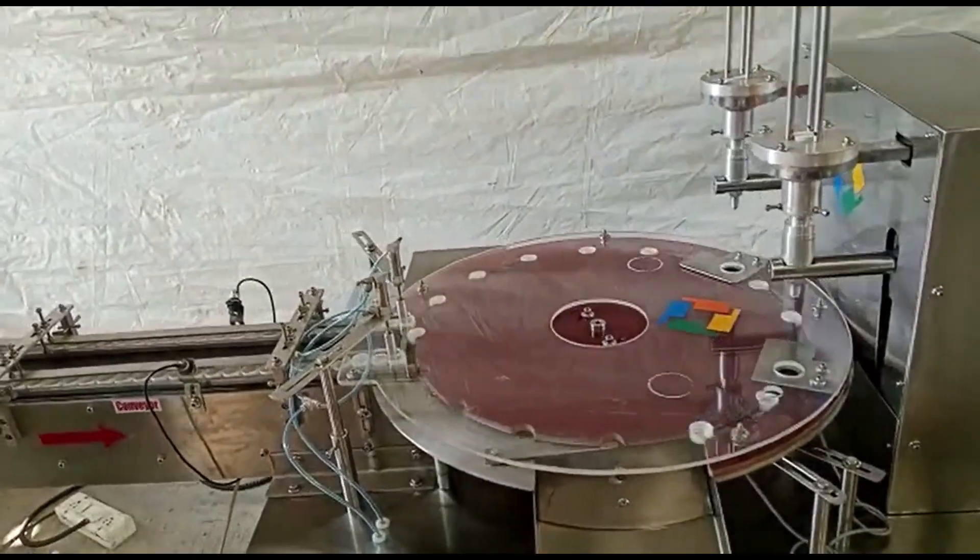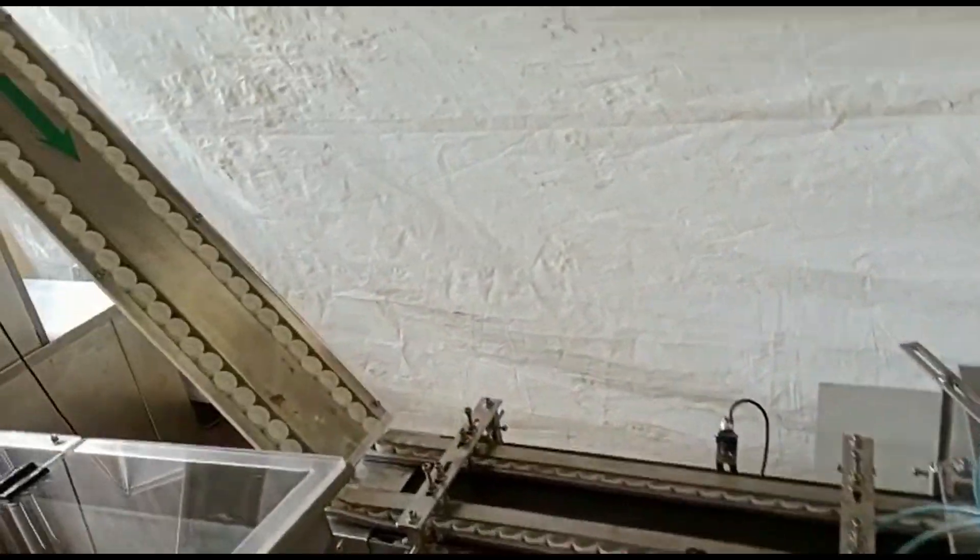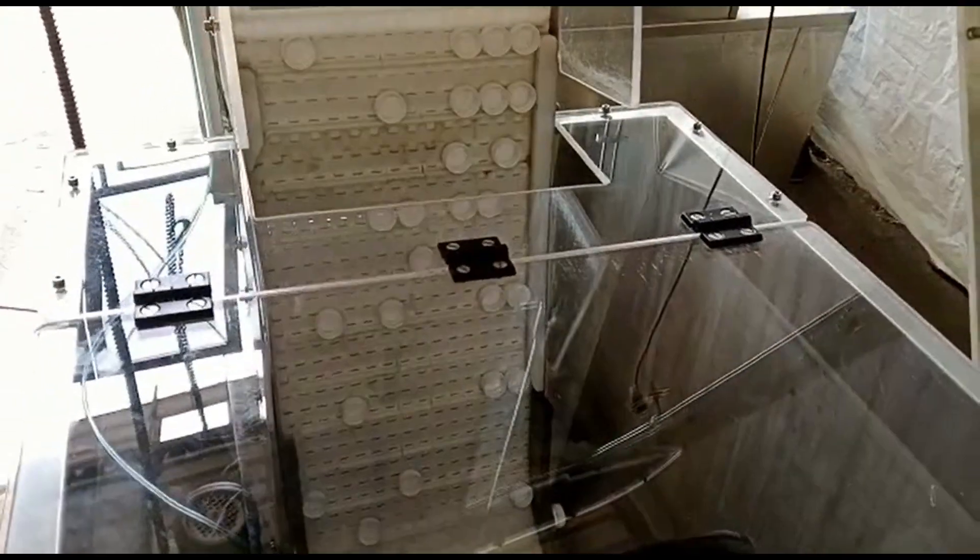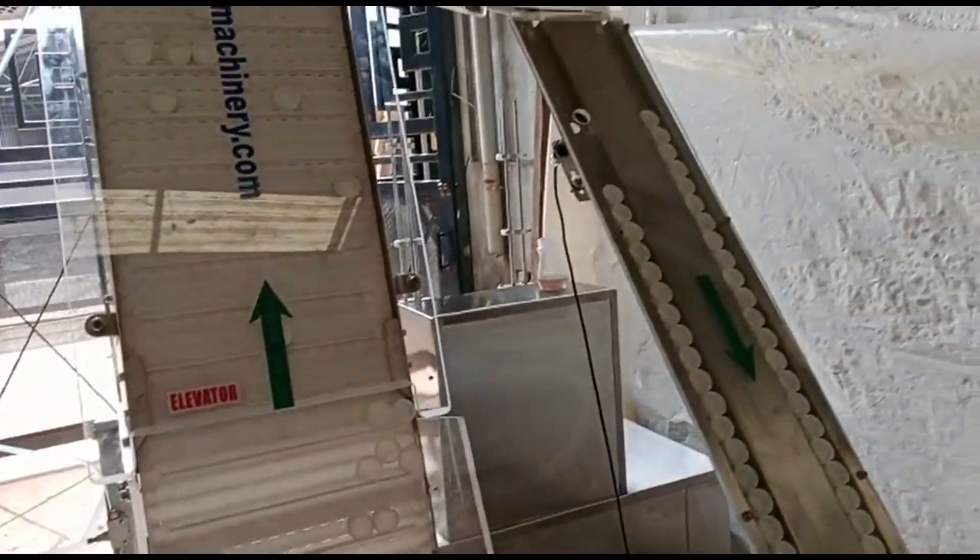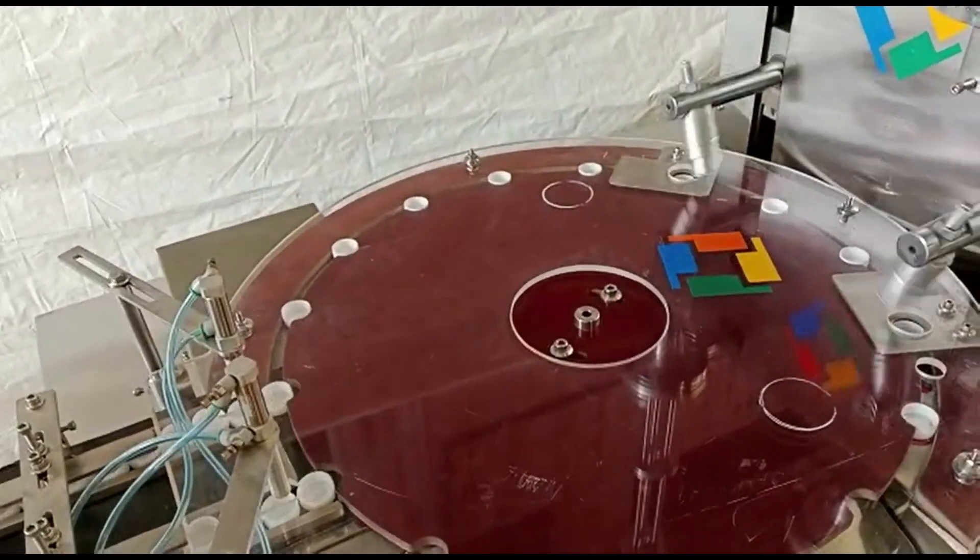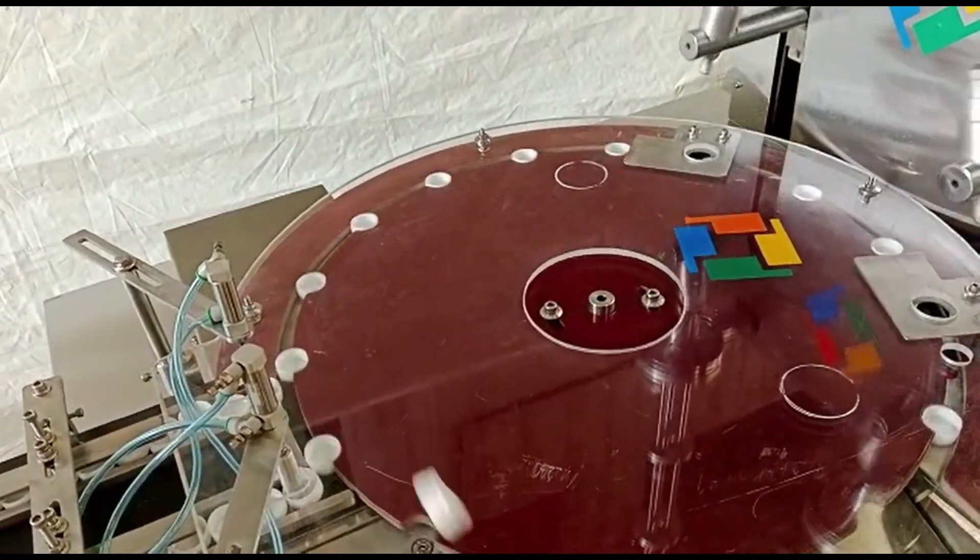The ward inserting machine includes mechanisms to orient and position individual wards correctly. This could involve rotating mechanisms, conveyor belts, or vacuum systems to ensure the wards are facing the right direction and are ready for insertion.